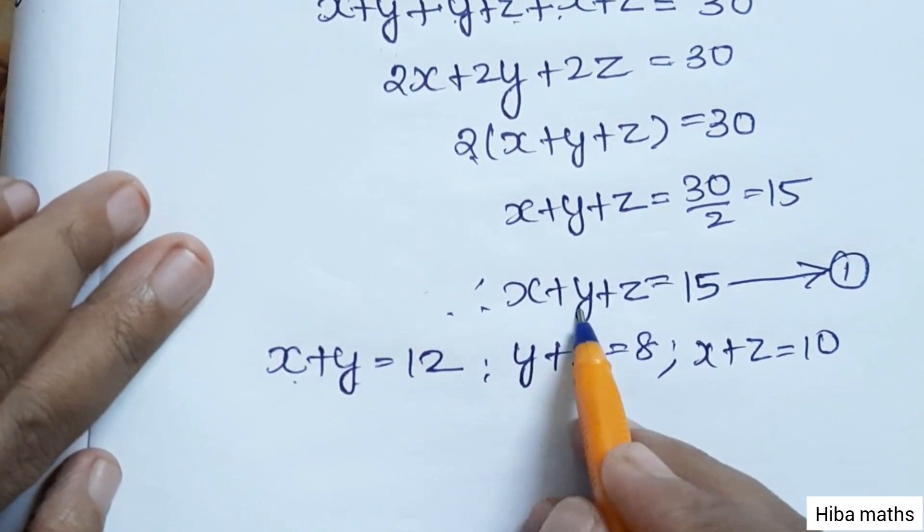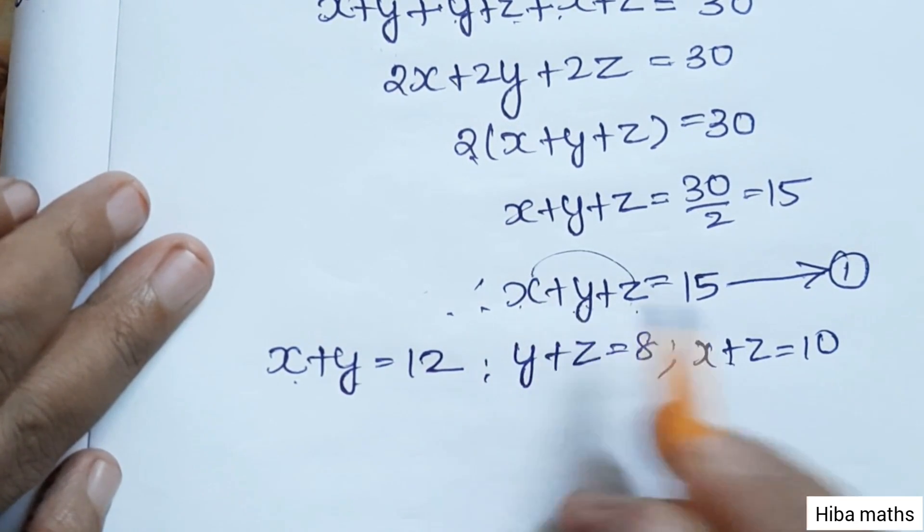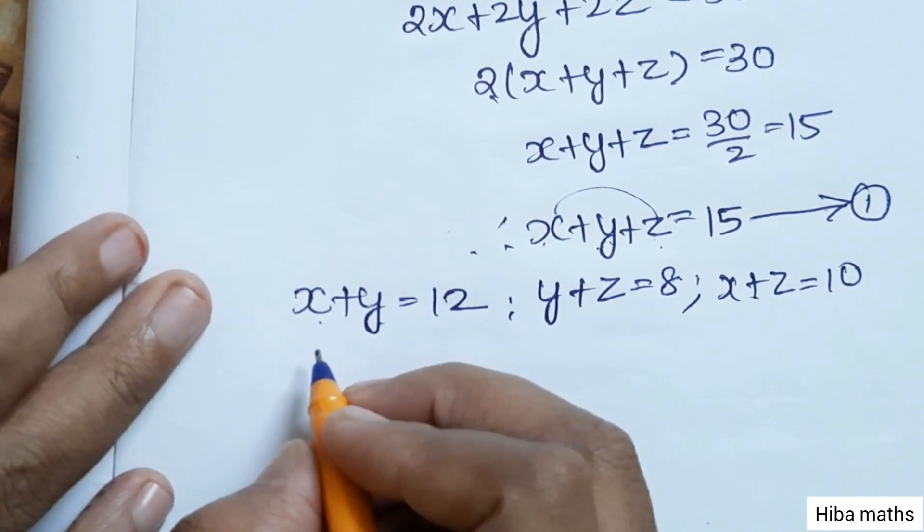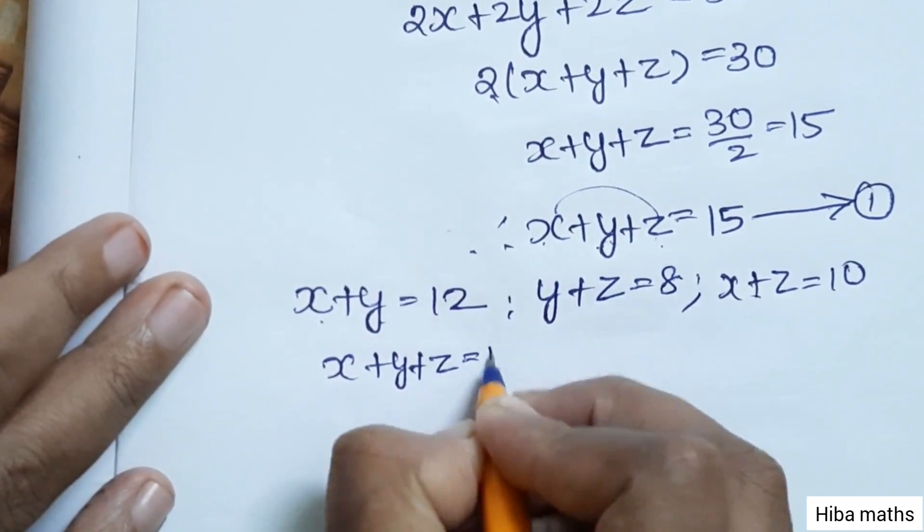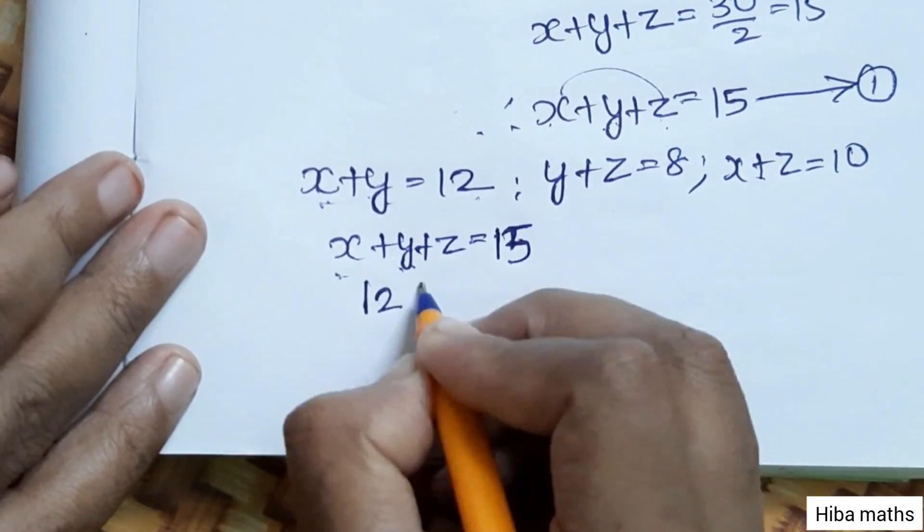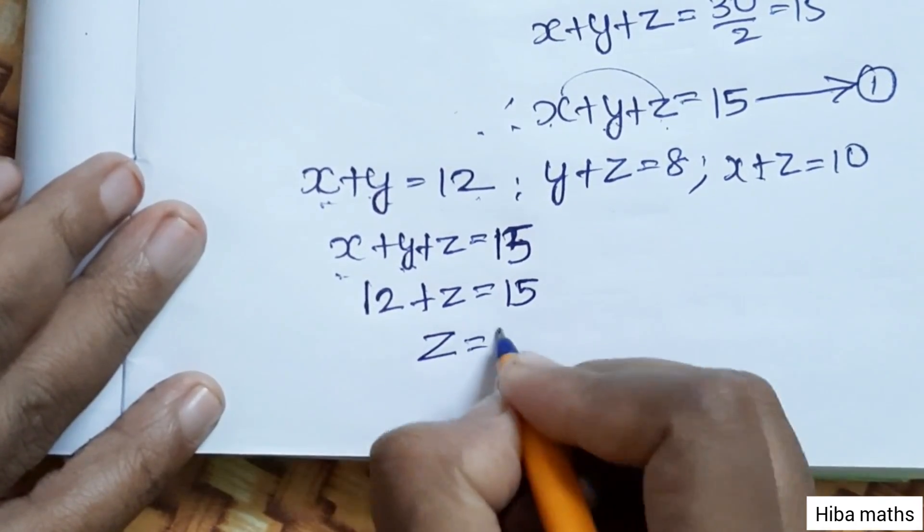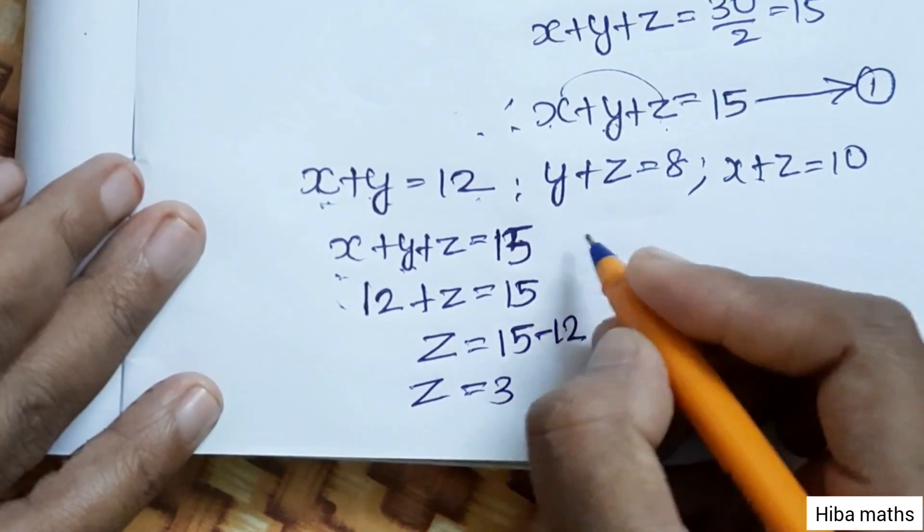We will substitute to find each variable. For the first equation, x plus y plus z equals 15. Since x plus y equals 12, we have 12 plus z equals 15. Then z equals 15 minus 12, so z equals 3.